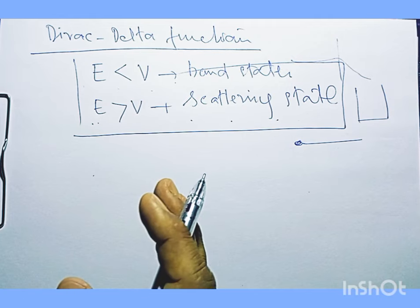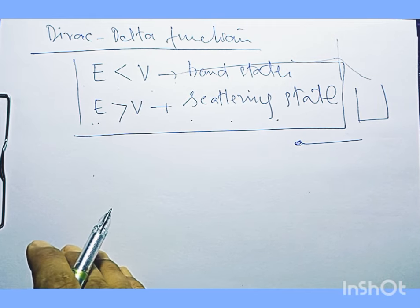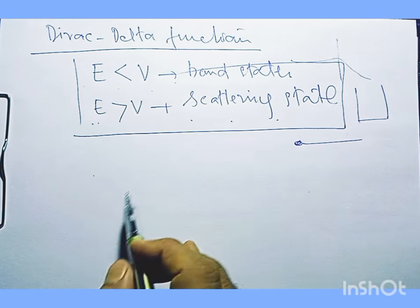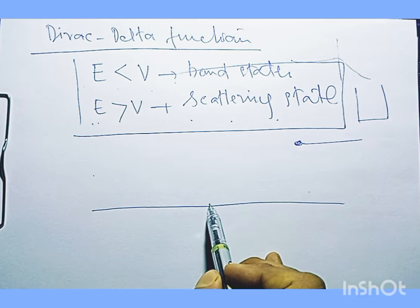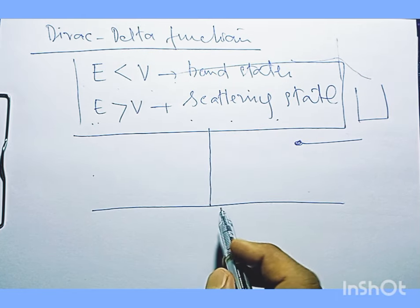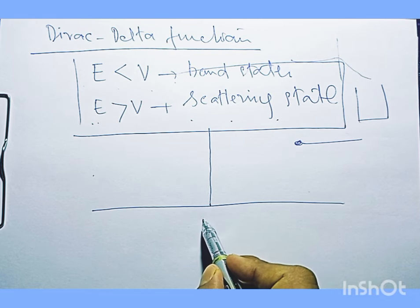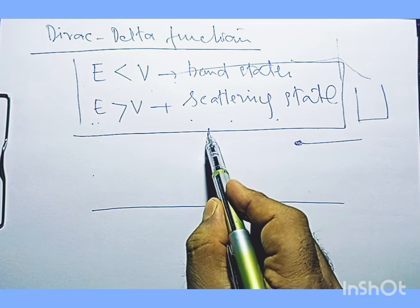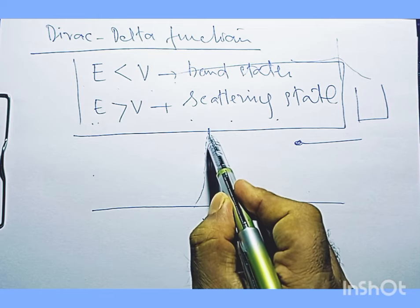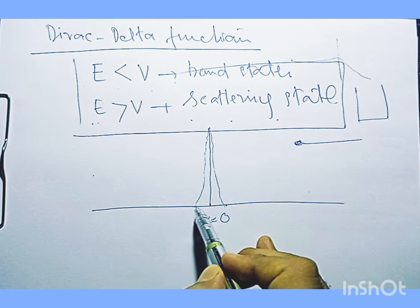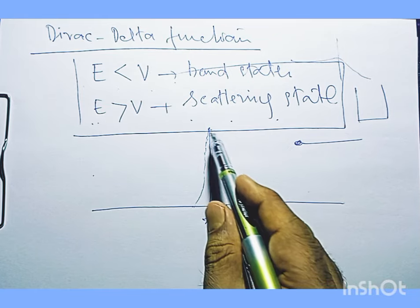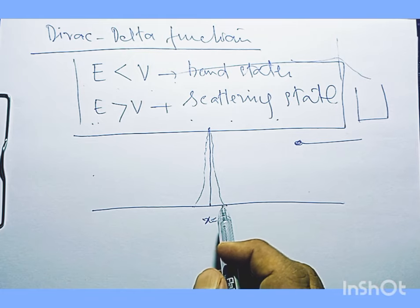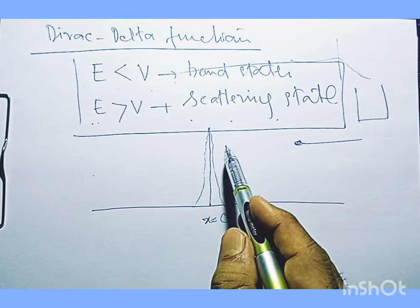The original context we want to discuss is the Dirac delta function. What is this Dirac delta function? It is basically an infinitely high and infinitesimally narrow spike at the origin — say, at x equal to zero — whose area, if you think about this spike as a small piece of area, is equal to 1. This is what is called the Dirac delta function.